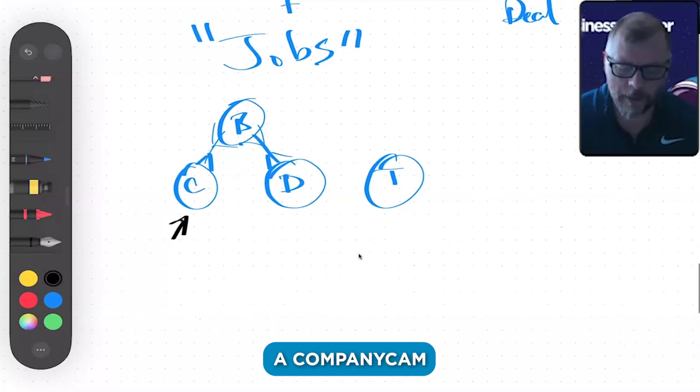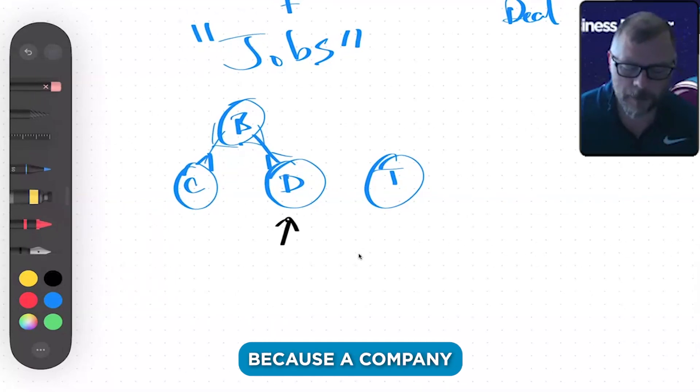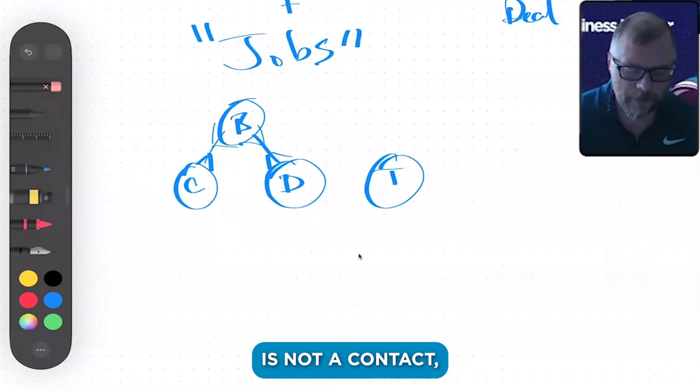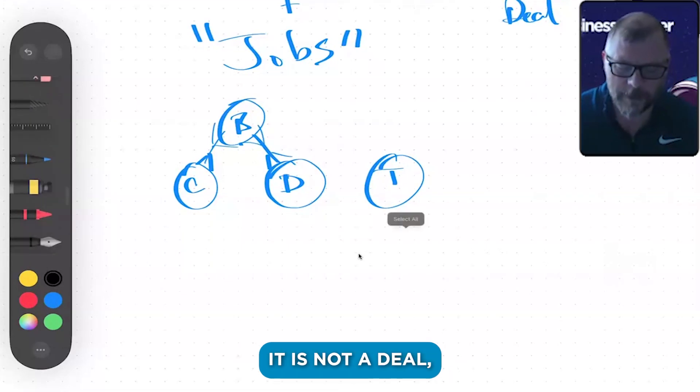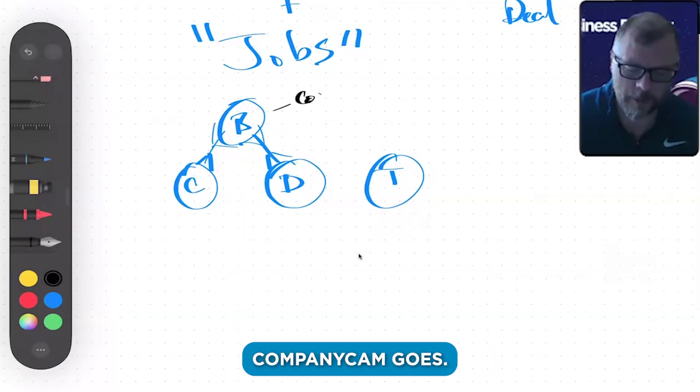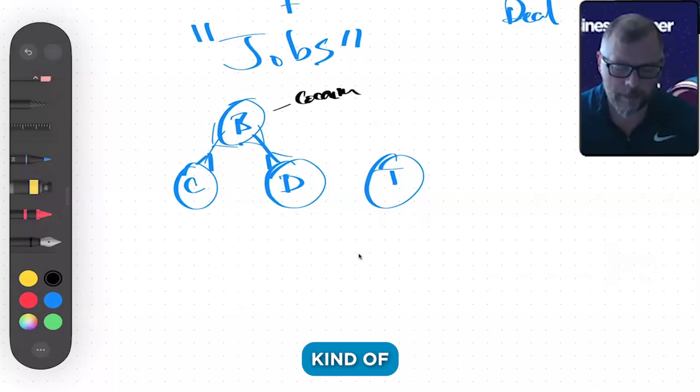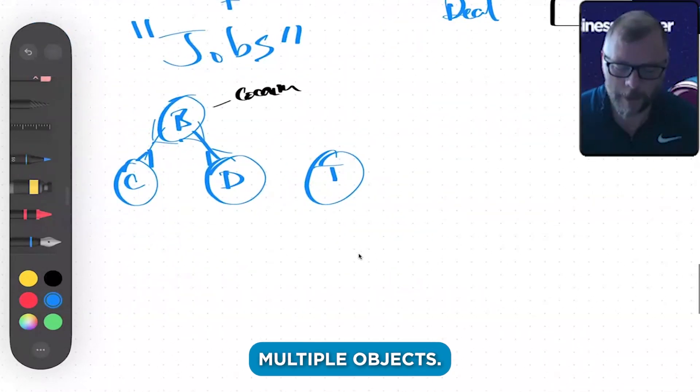A CompanyCam is not a contact, it is not a deal, it is a building. And so that's where your CompanyCam goes. That's just a quick, kind of quick and dirty explanation of why there has to be multiple objects.